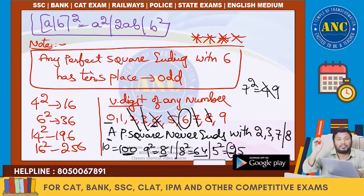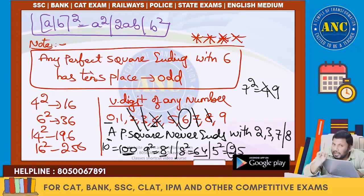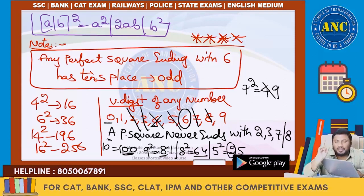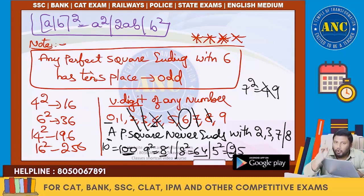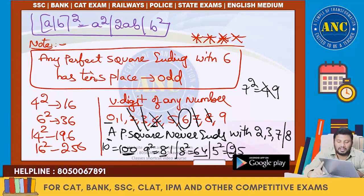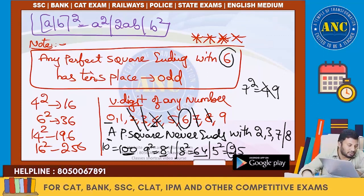So in any perfect square, only when the unit digit is 6 will the tens place be odd. The reverse is also true: if a perfect square has an odd tens digit, the unit digit must be 6. Any perfect square ending with 6 has only an odd tens place.